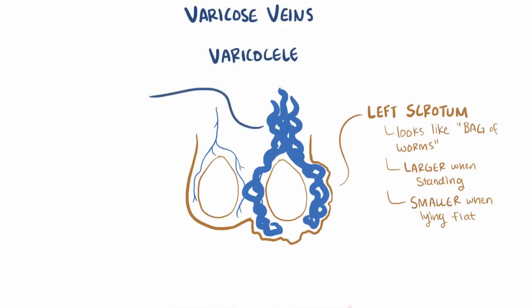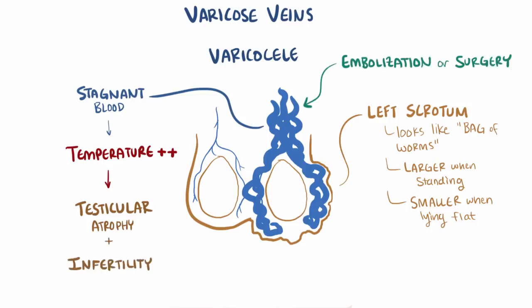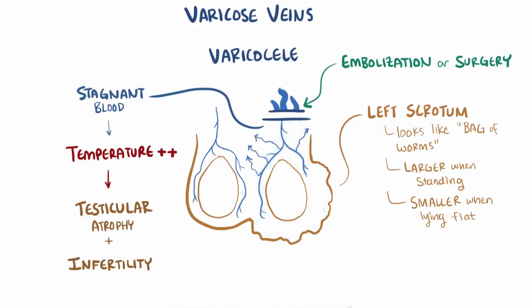Also, all this warm, stagnant venous blood can cause the testicular temperature to rise, and over time this can result in testicular atrophy, or wasting away, as well as poor quality sperm and infertility. Generally, embolization or surgery can be used to get rid of this problematic vein, and the testicles then drain through smaller collateral veins.